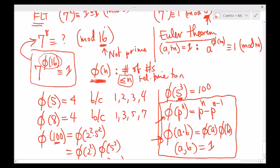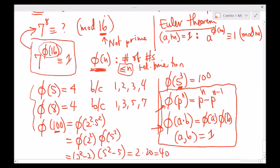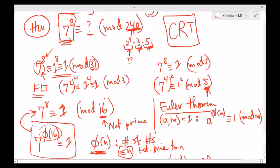So 7^8 has remainder 1 when divided by 3, remainder 1 when divided by 5, and remainder 1 when divided by 16. Therefore 7^8 has remainder 1 when divided by 240. Euler's theorem and the phi function are amazing tools — φ(n) helps us organize how we handle powers in modular arithmetic.